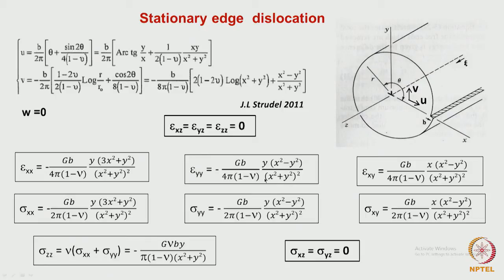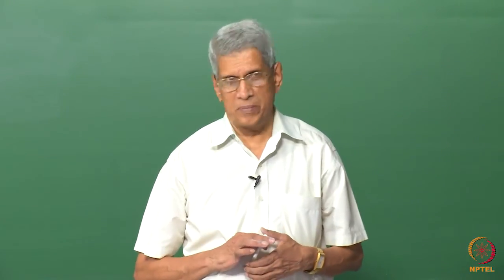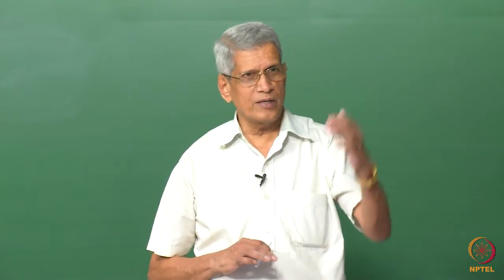From these strain values, using generalized Hooke's law, we can calculate the stress. One should note that although the strain epsilon_zz is zero, sigma_zz still exists — this comes from Poisson's effect. Sigma_xz and sigma_yz are zero, but sigma_xy (shear in the xy plane) is present. In the y and x planes, tensile or compressive stresses are present, and in the z direction a stress also exists.